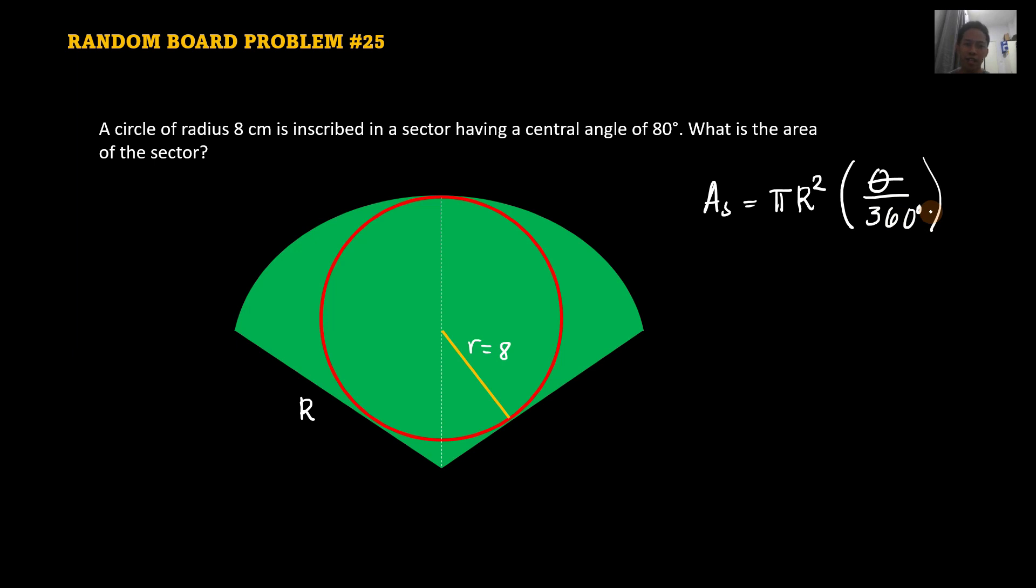So no other fancy formulas for that now. So this is the formula for finding the area of the sector given the central angle which is in degrees. So this is the proportion. So to find the area of the sector, we need the radius of the sector. So how can you do that? How can you get that?